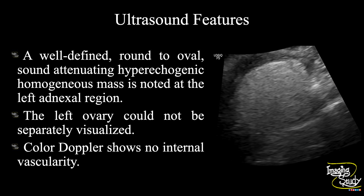In summary, a well-defined round to oval sound-attenuating hyperechoic homogeneous mass is noted at the left adnexal region. The left ovary could not be separately visualized. Color Doppler shows no internal vascularity. The features suggest it as a dermoid cyst or cystic teratoma.